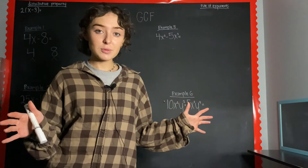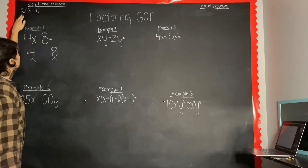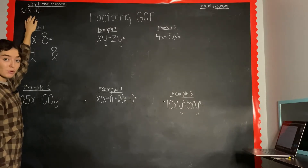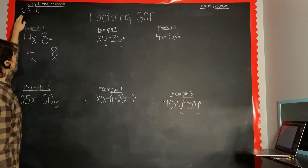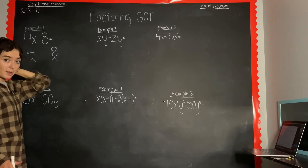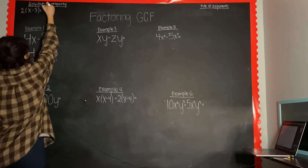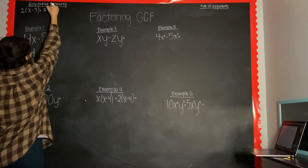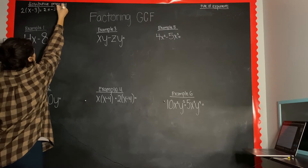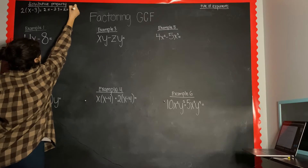I've written down six examples and let's go through them together. The distributive property is often used when we're multiplying a number by an expression in parentheses. Here we're multiplying 2 times (x minus 3), and to multiply this we're distributing this 2 to the x and then to the 3. So 2 times x, then bring over that subtraction sign, 2 times 3, which equals 2x minus 6.